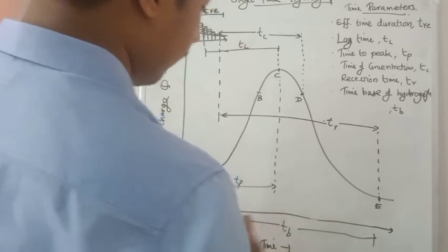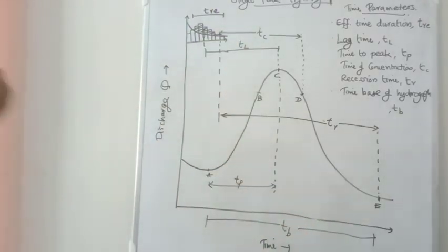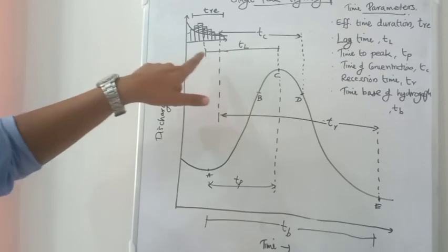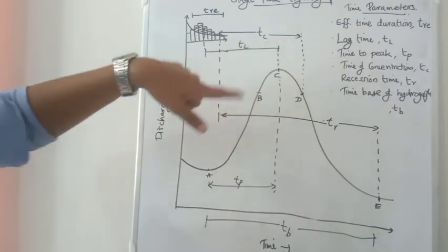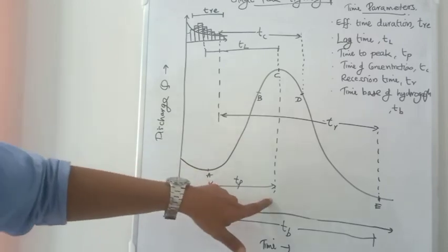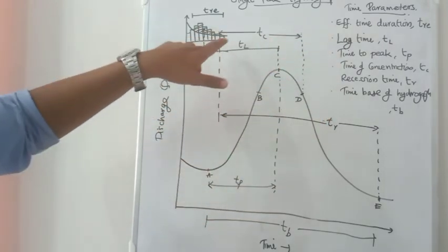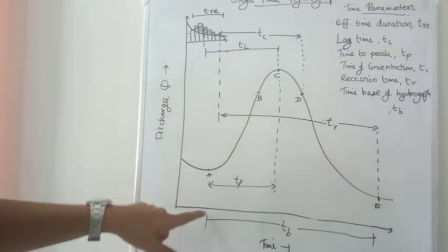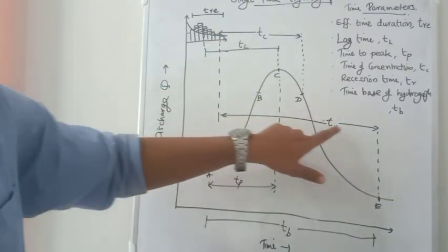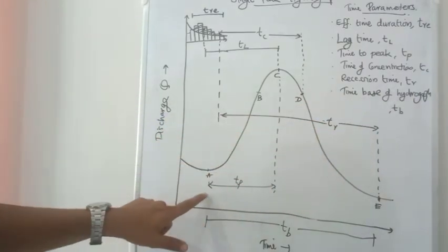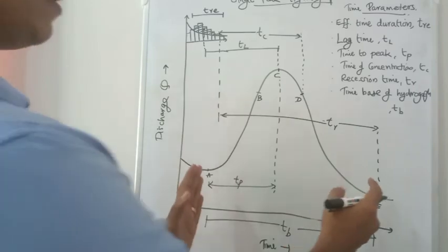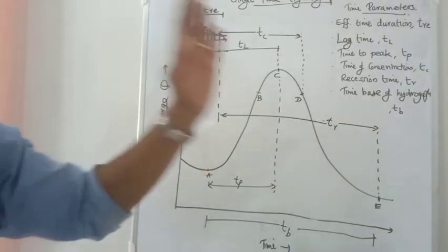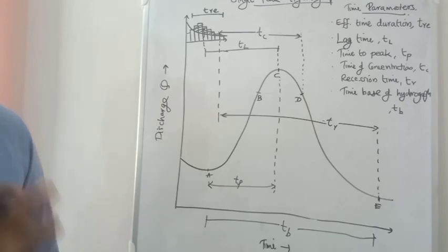Tc is the total duration of the single peak hydrograph from the end of effective rainfall. Time of concentration is from effective rainfall end point D. Recession time is from the same point to end point E. Time base of the hydrograph is from A to E. So that is the single peak hydrograph — please try to understand that and ask me any doubts.